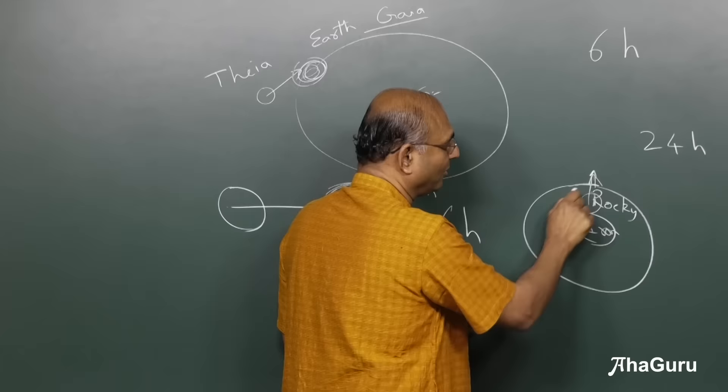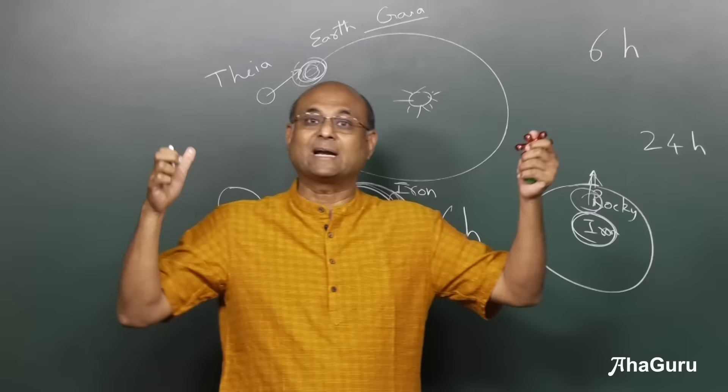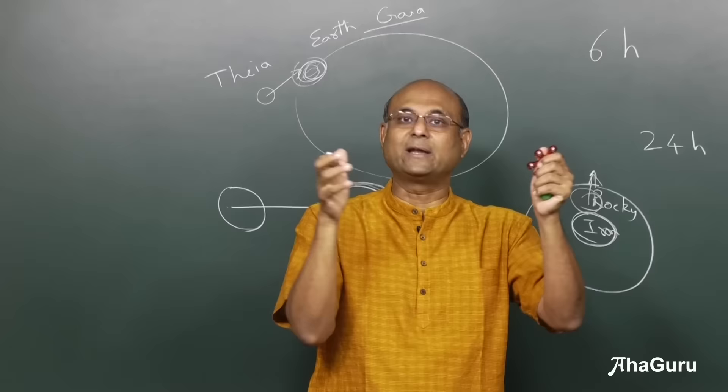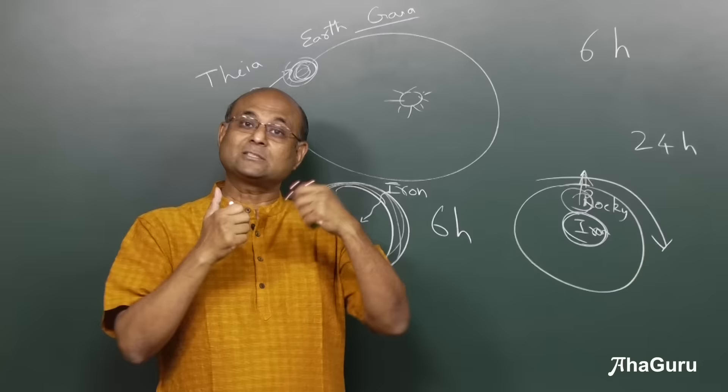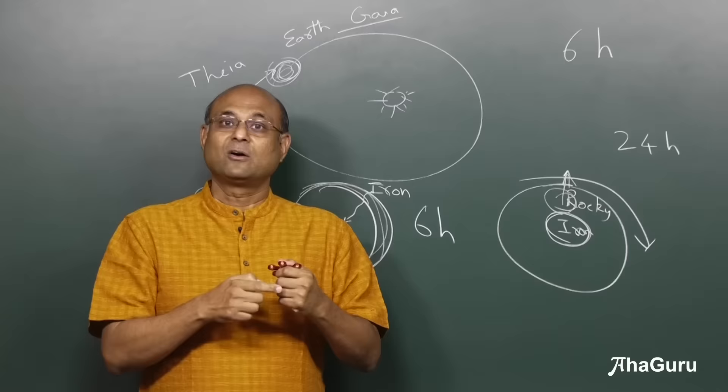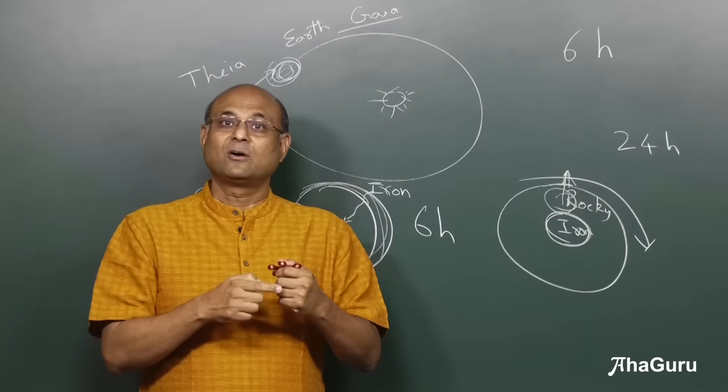The centerpiece of the Earth is iron because at that collision the entire Earth melted and the heavier iron particles sank to the center. Now we have a very fast-spinning Earth. Why did it slow down to 24 hours? That has a huge connection to the Moon.